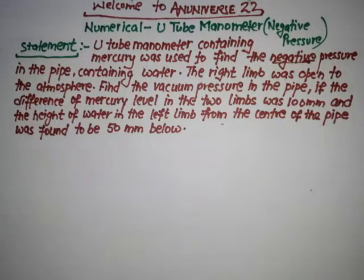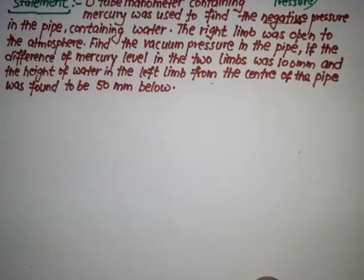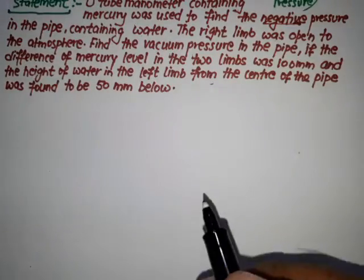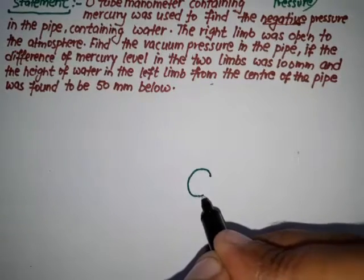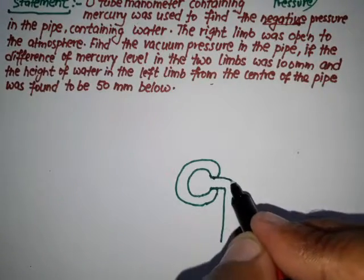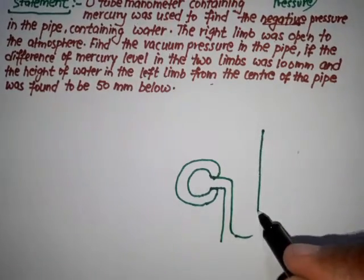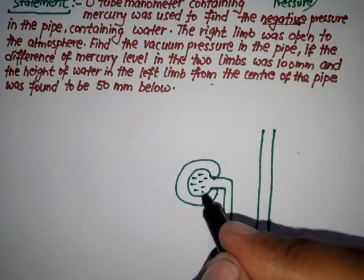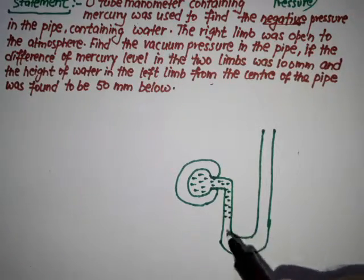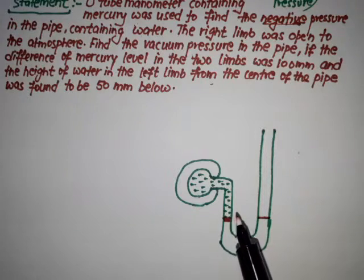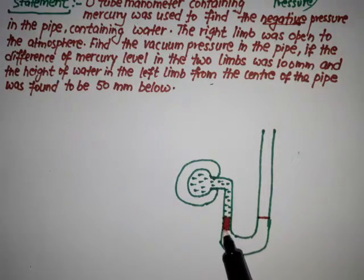Now we try to draw a diagram based on the given statement. The pipe contains water and the manometer contains mercury. This is the U-tube manometer with its right limb open to the atmosphere. This pipe contains water, and this is the case of negative pressure. This is mercury in the manometer.